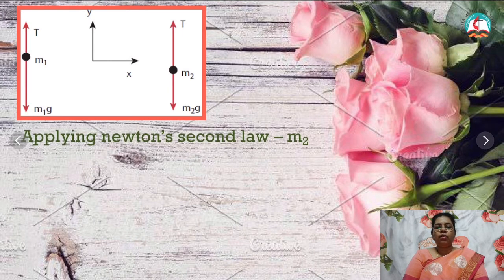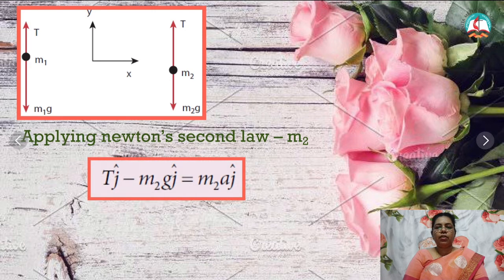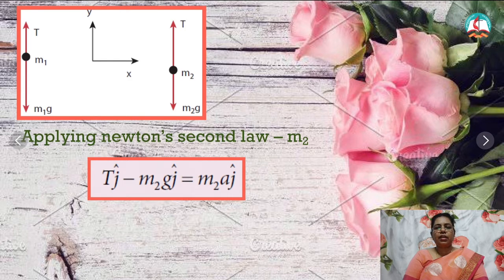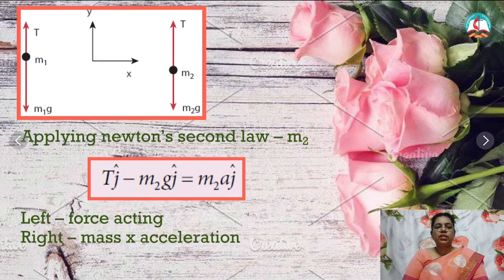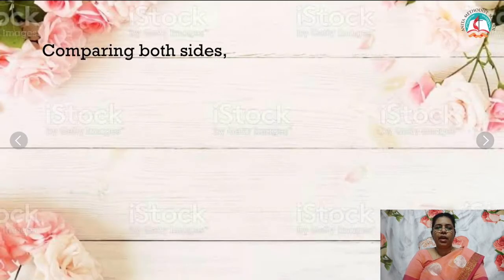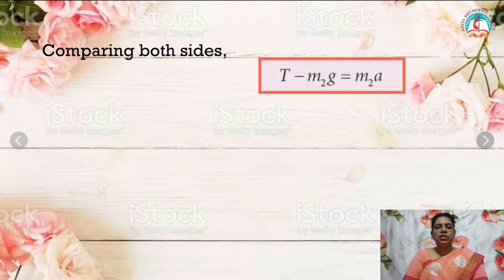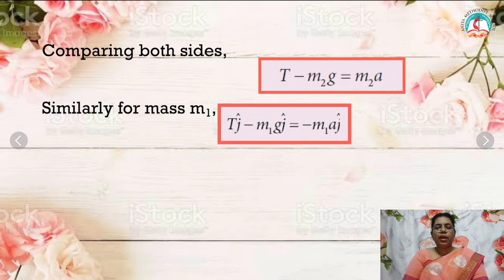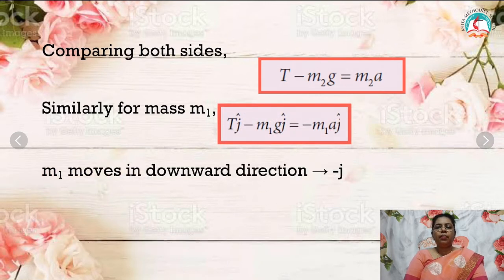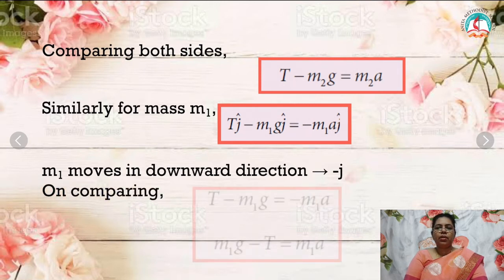Applying Newton's second law for mass M2: the forces are tension T and gravitational force M2g, so T j-cap minus M2g j-cap equals M2a j-cap. The left-hand side shows the force and the right-hand side is mass times acceleration per Newton's second law. Comparing both sides: T minus M2g equals M2a. Similarly for mass M1: T j-cap minus M1g j-cap equals minus M1a j-cap, because M1 moves downward. Comparing: T minus M1g equals minus M1a, or M1g minus T equals M1a.